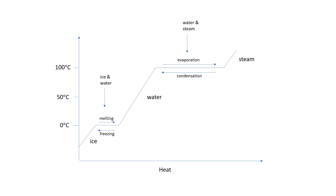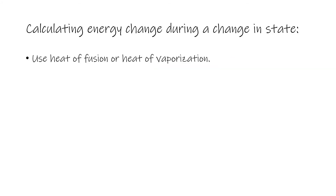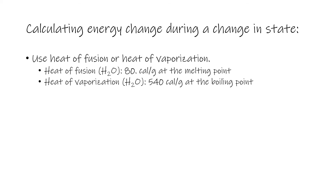The next thing we want to look at is how to calculate the energy change during these processes. We will start by calculating energy change during a change in state — where we are either freezing, melting, vaporizing, or condensing. To calculate the energy involved we would use either the heat of fusion or the heat of vaporization.